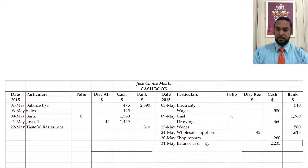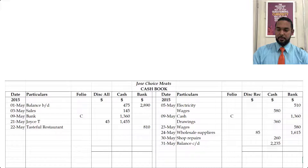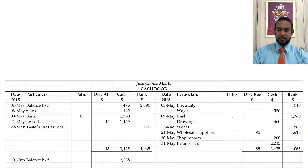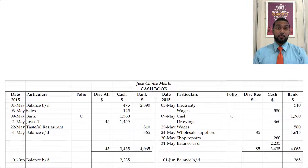Now we see the balance carried down for cash on the credit side, brought down on the debit side. It seems we had more items on the credit side for bank, which means bank ended up with a balance carried down from the debit side — meaning we ended up with a bank overdraft of $365 because we spent more money than we had in the bank.